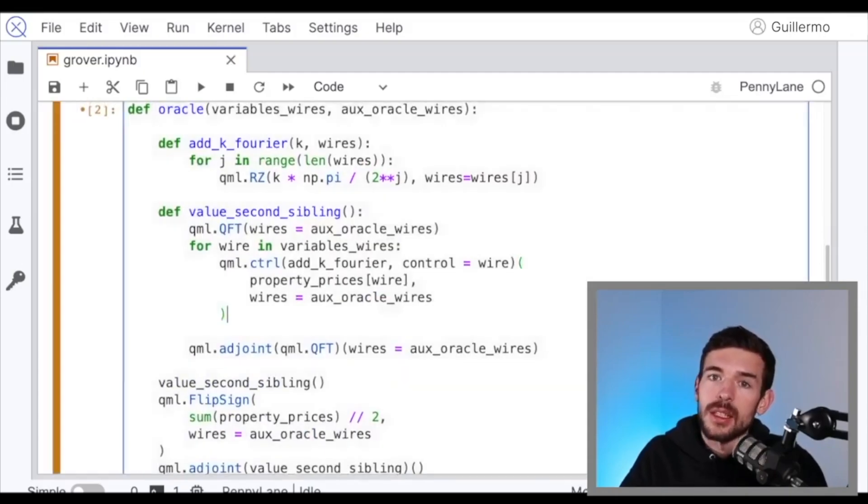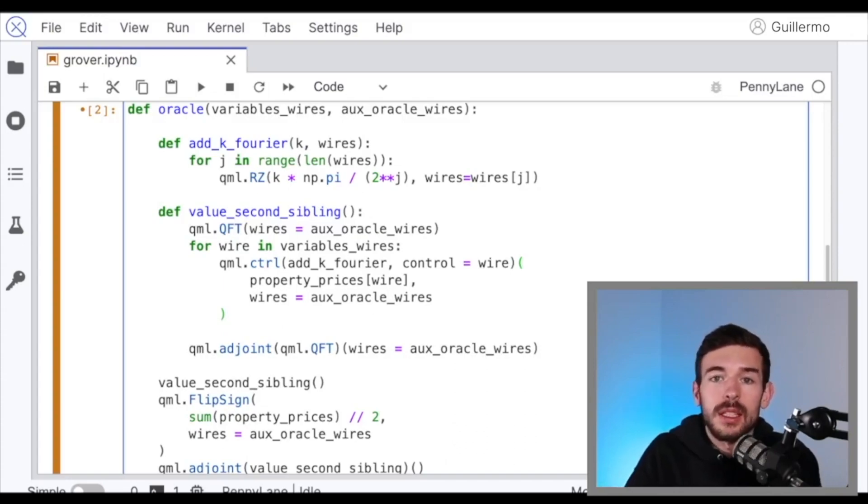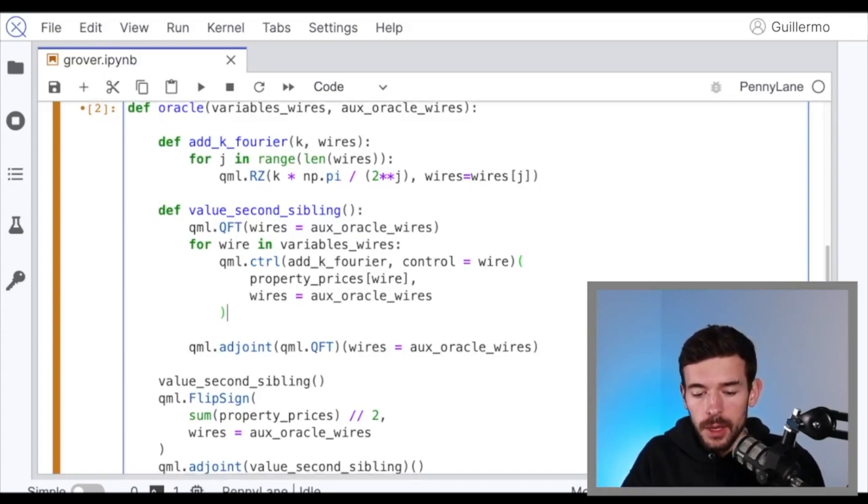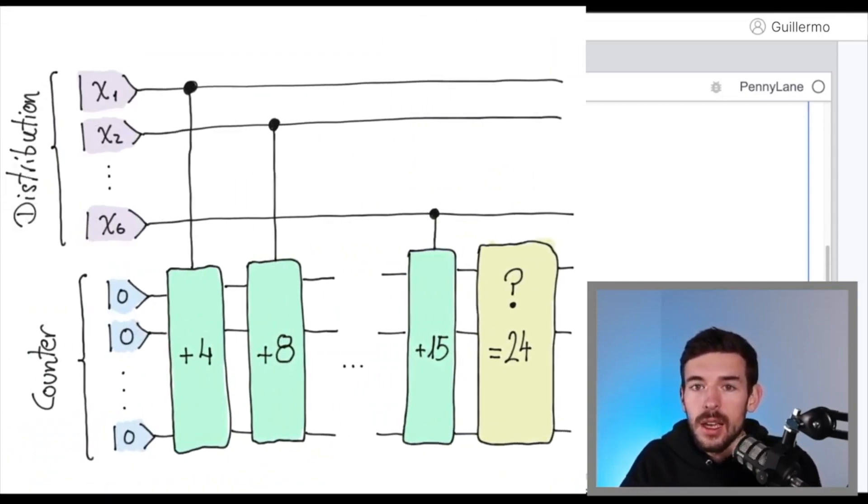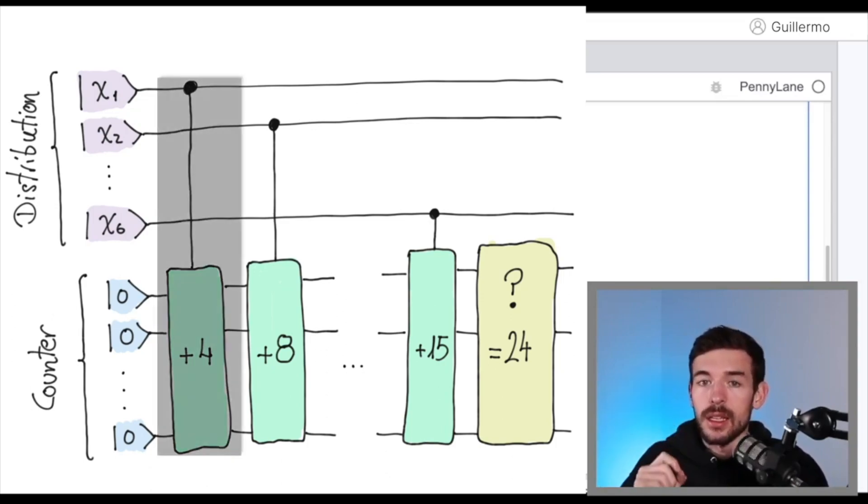The next step is define the oracle, this operator that is going to flip the sign of the elements that satisfy our condition. So in order to do that, we're just going to apply basic arithmetics, and the final circuit will be something like this one that we can see in the script. The idea is very easy. If xi, in that case x1, is equal to 1, we are going to add to a counter, we are going to use auxiliary qubits for that, in this counter we are going to add 4, because 4 is the value of the first property.